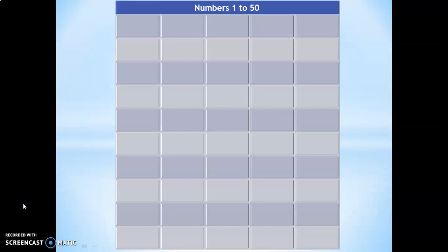Now, let us begin by testing the readiness of the children to say and write the numbers 1 to 50 in a series as they appear on the screen. If you are a teacher in the class using this video, you could make your children say the numbers along with the numbers as they appear on the screen. Or if you are a parent using this video, you may ask your child to say the numbers as they appear on the screen. So, let us begin now.